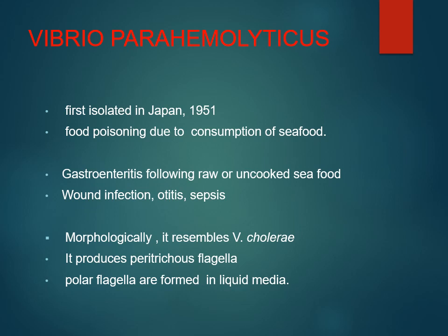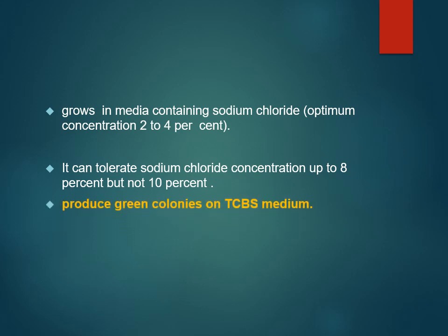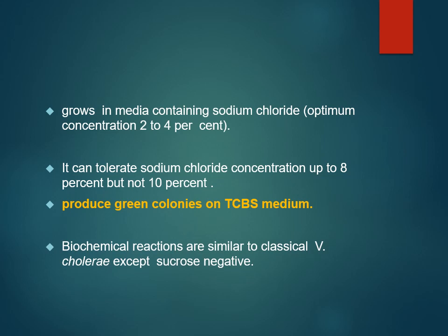Morphologically, Vibrio parahaemolyticus resembles Vibrio cholerae but has peritrichous flagella — flagella all over the bacterium — when on solid media, while in liquid media it has only a single polar flagellum. It grows in media containing 2–4% sodium chloride and can tolerate up to 8%. On TCBS media, Vibrio cholerae produces yellow colonies while Vibrio parahaemolyticus produces green colonies, allowing easy differentiation. Biochemically it is similar but does not ferment sucrose, hence the green colonies.